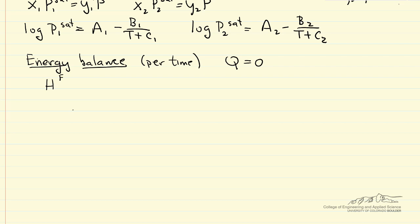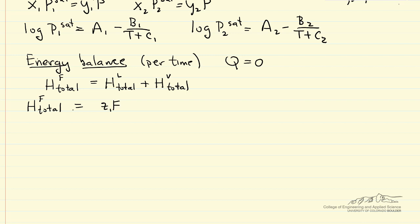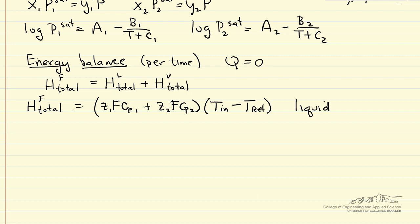The total enthalpy of the feed per second must equal the enthalpy leaving in the liquid phase plus the enthalpy leaving in the vapor phase. For the feed, we write it as: Z1 times F times the heat capacity of component one (liquid), plus the corresponding term for component two — all times (Tn minus T_reference), where T_reference is a reference temperature we can pick freely. These heat capacities are liquid heat capacities.